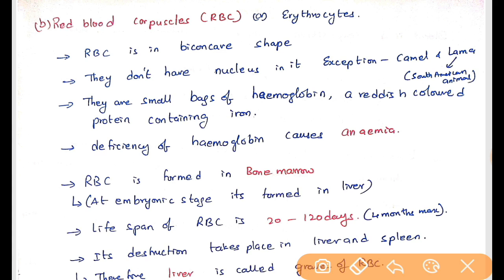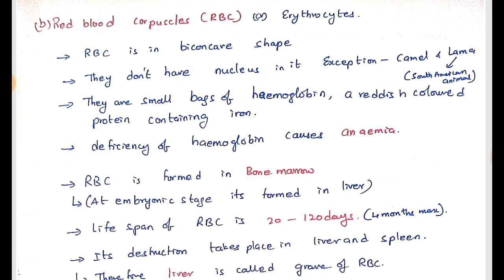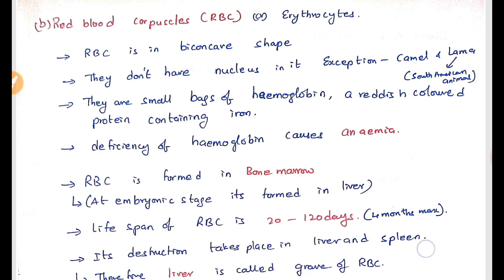RBCs are small bags of hemoglobin, a reddish colored protein that gives red color to the red blood cells. The deficiency of hemoglobin causes anemia. RBC is formed in bone marrow. The bone marrow is not fully developed in the baby when it is inside the womb, so at that time RBC is produced from the liver — that is, RBC is produced from the liver during the embryonic stage. The lifespan of RBC is 20 to 120 days. Its destruction takes place in the liver and spleen.